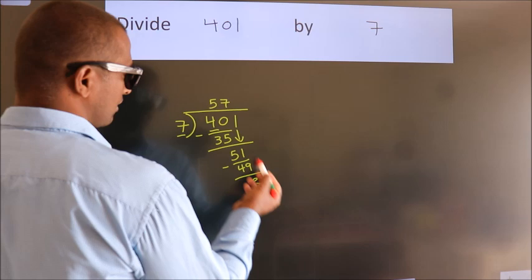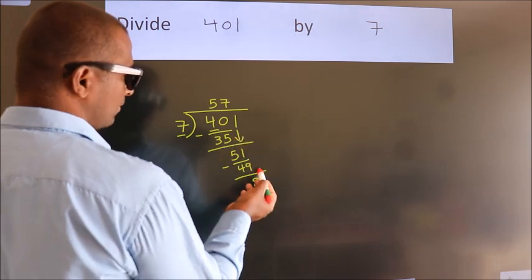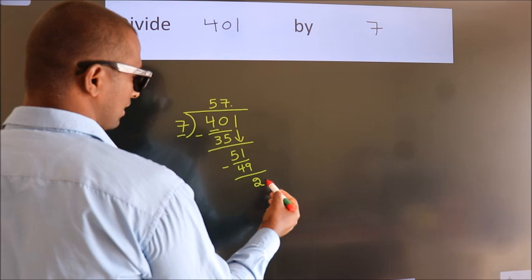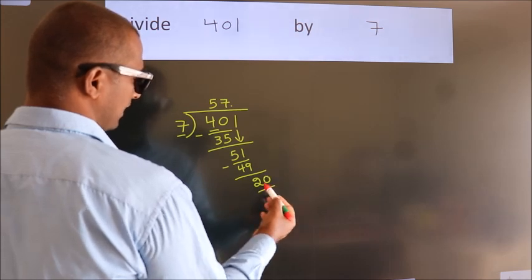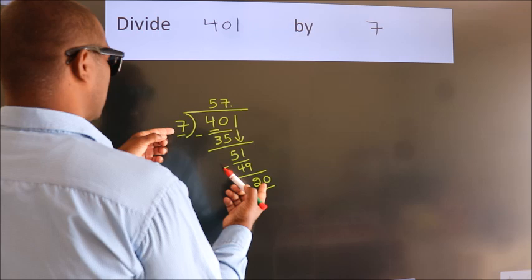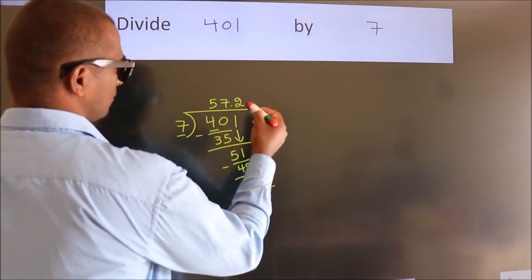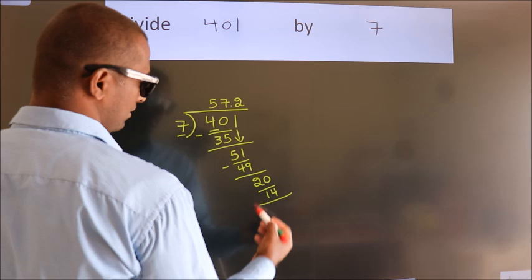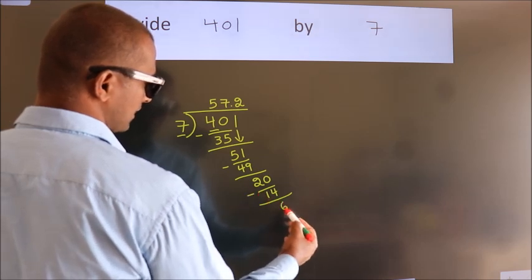After this, no more numbers to bring it down. So, what we do is we put dot, take 0, so 20. A number close to 20 in 7 table is 7 twos, 14. Now, we subtract, we get 6.